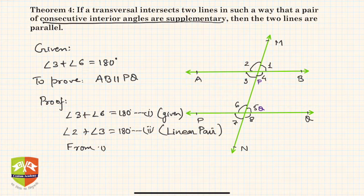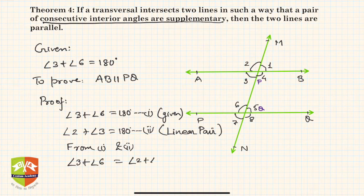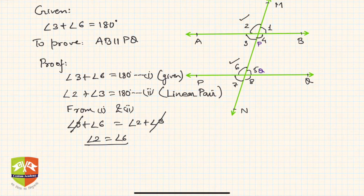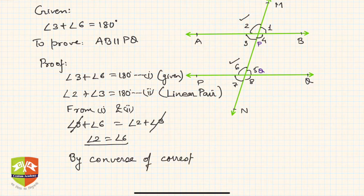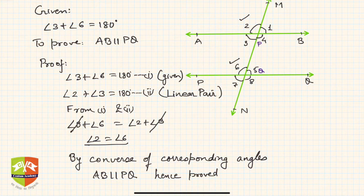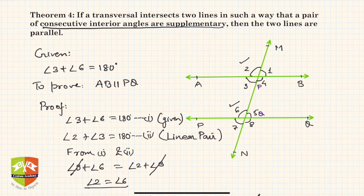From statements one and two, angle 3 plus angle 6 equals angle 2 plus angle 3, so angle 3 cancels, giving angle 2 equals angle 6. Now, angles 2 and 6 are corresponding angles. Therefore, by the converse of the corresponding angles axiom — which states that if corresponding angles are equal then the lines are parallel — hence proved. The converse of the theorem is also proved.